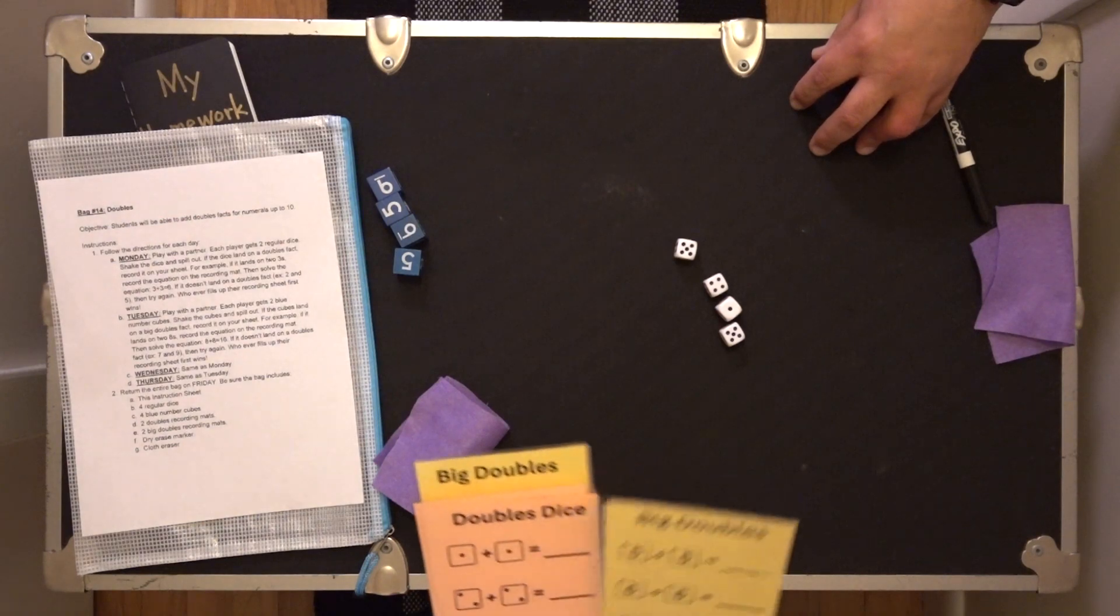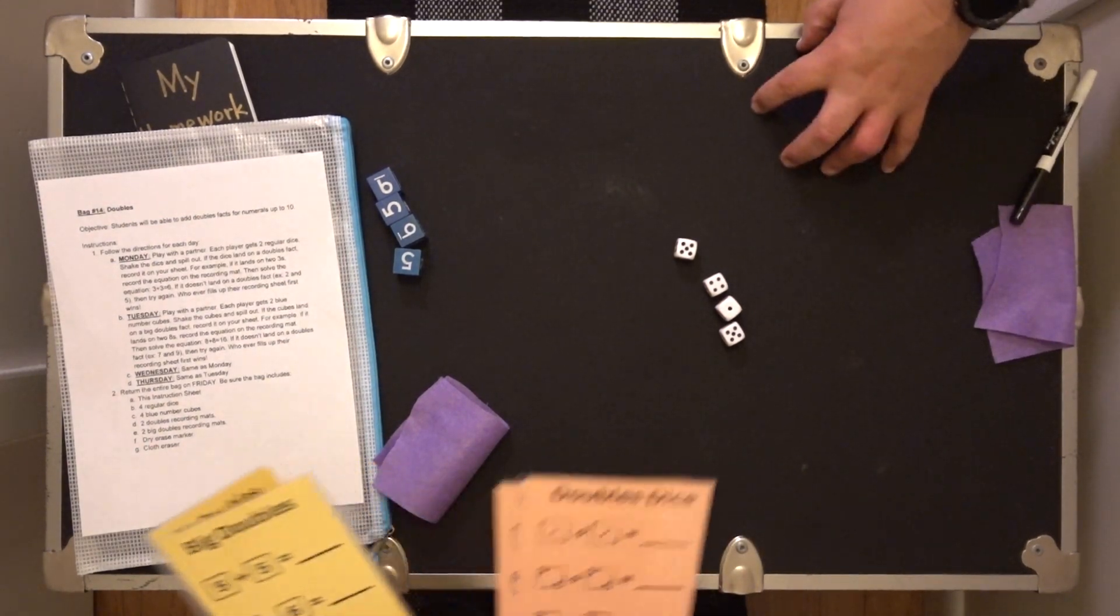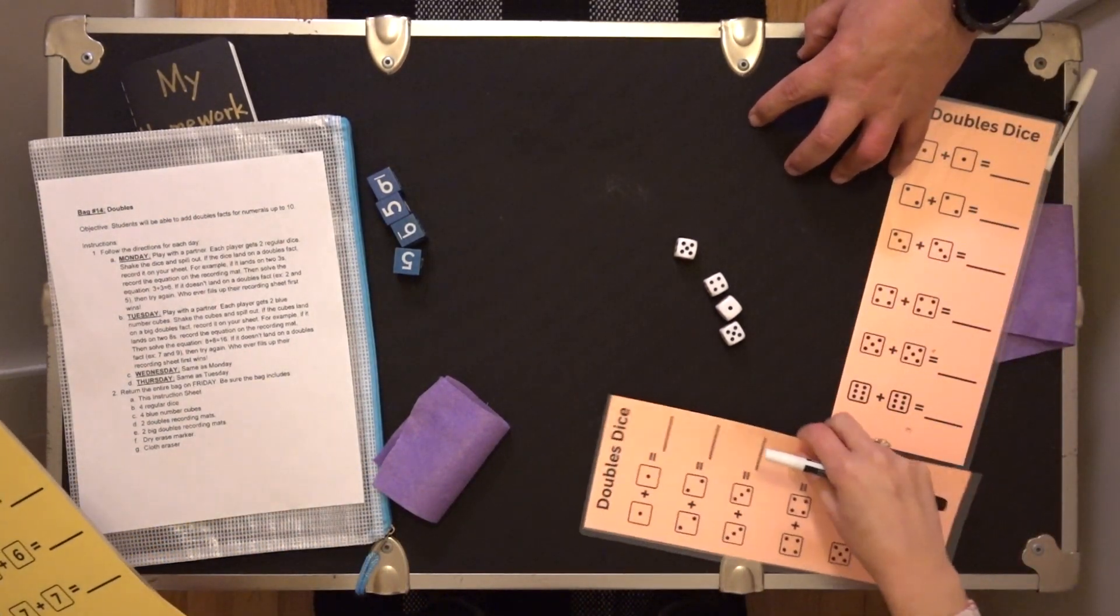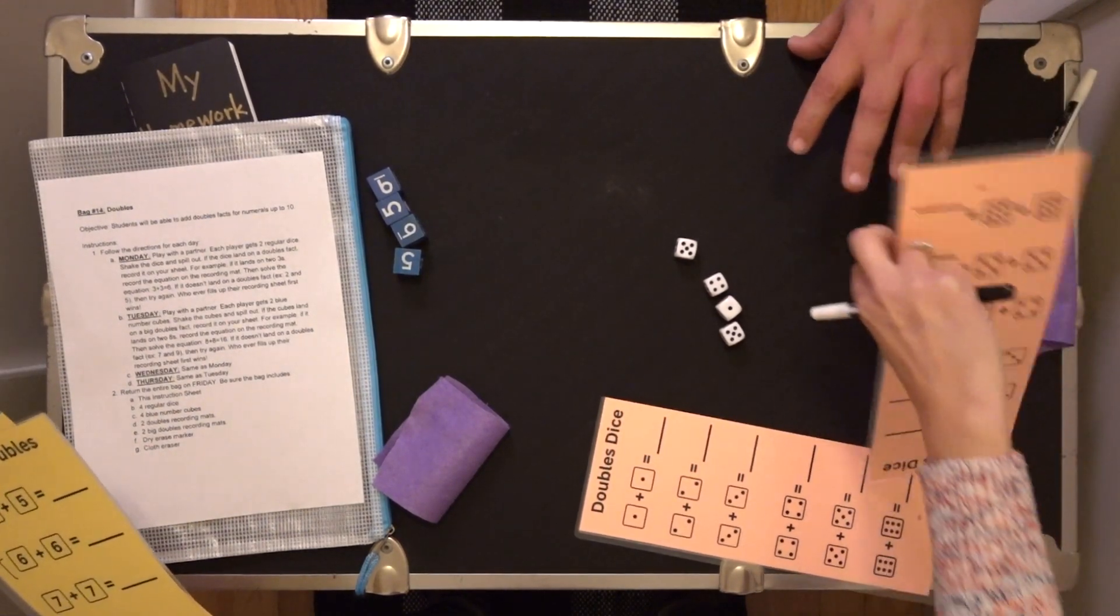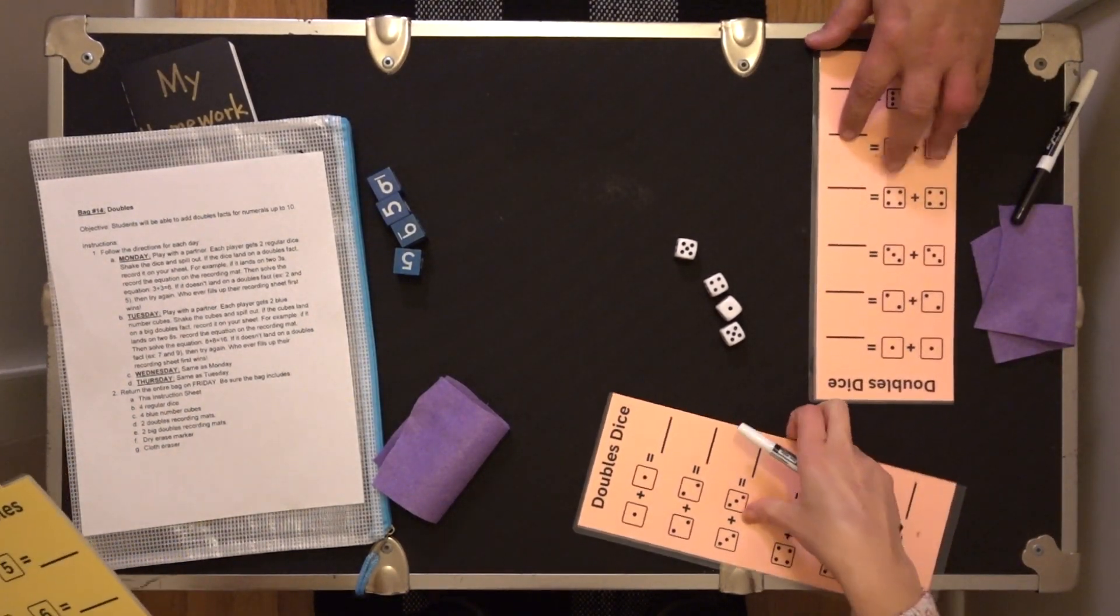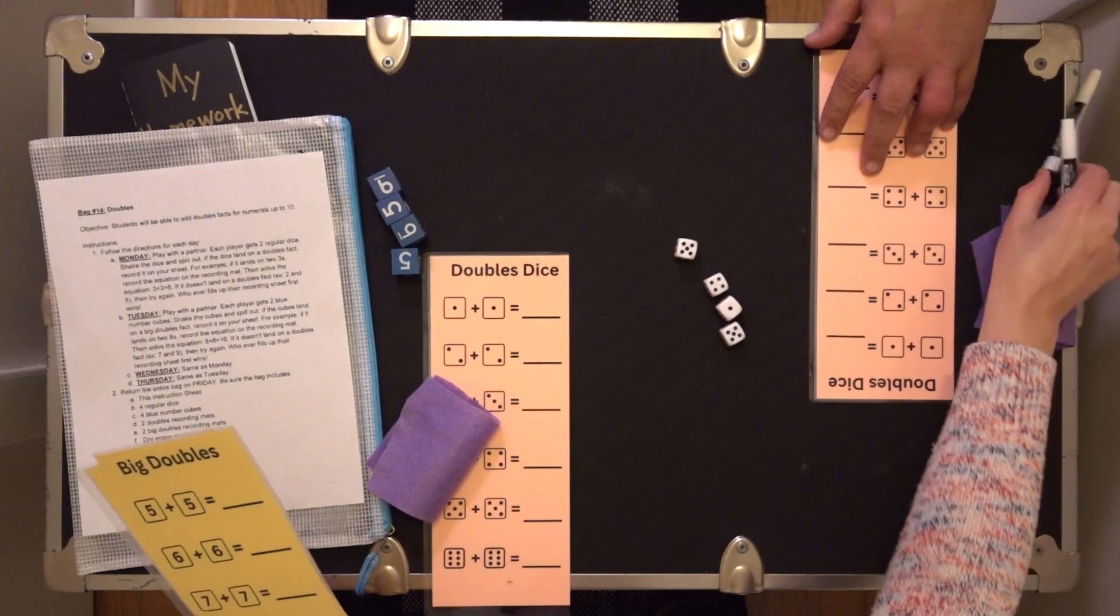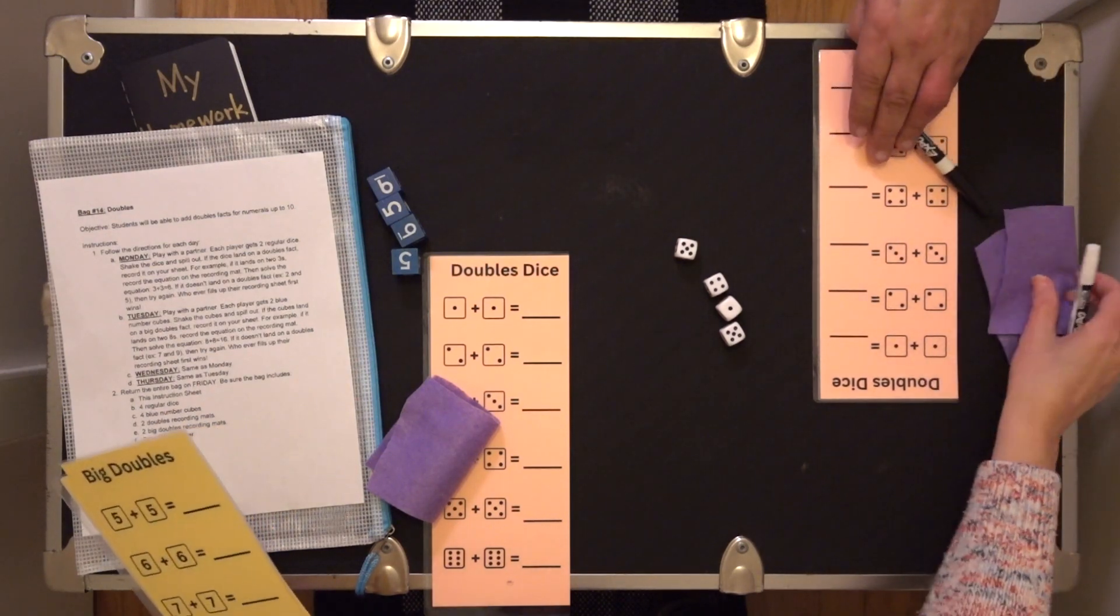And there's yours. And we are going to start with the doubles dice recording sheets. So there's one for you, and one for me. You have a marker here, and your eraser.